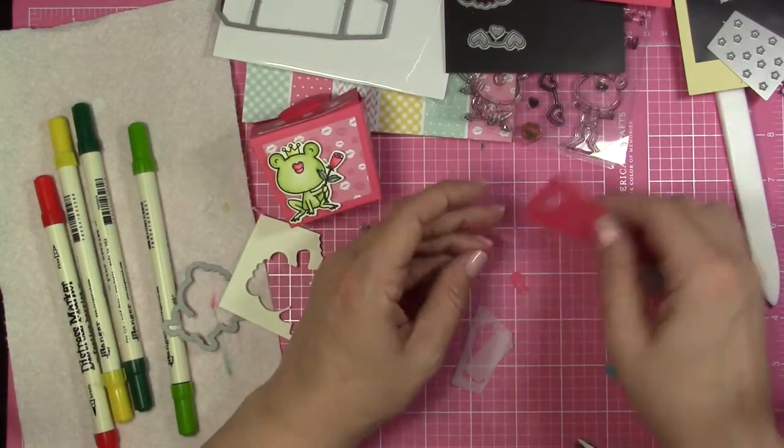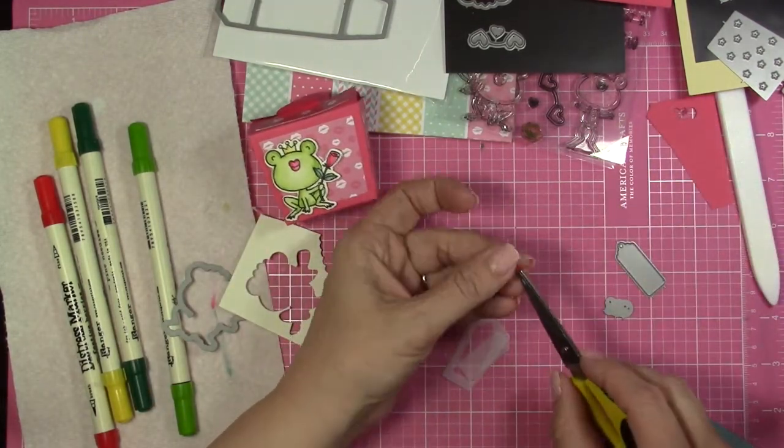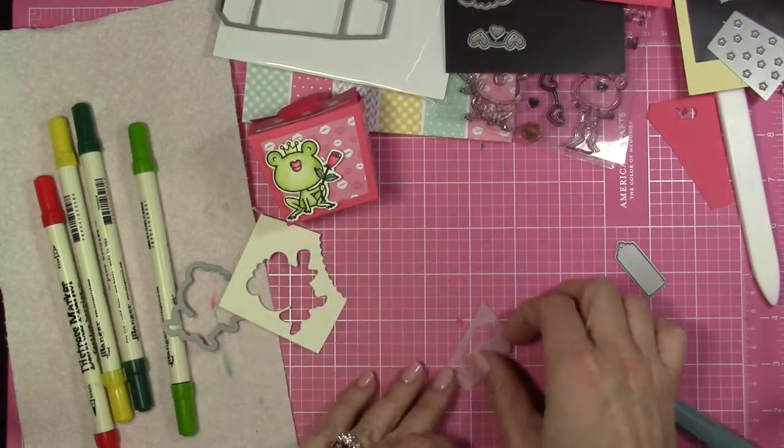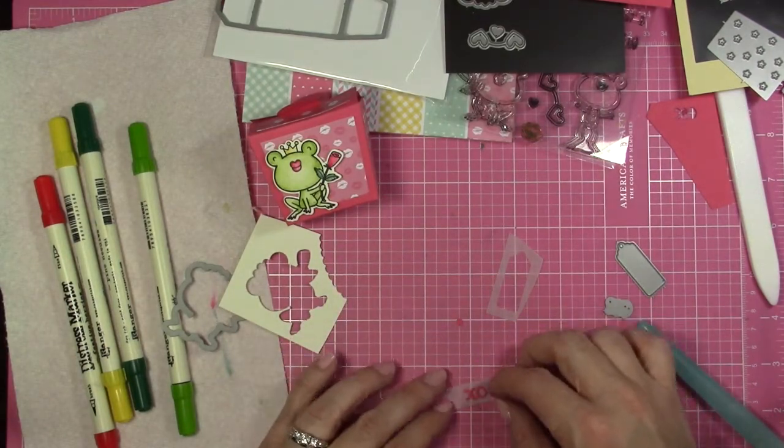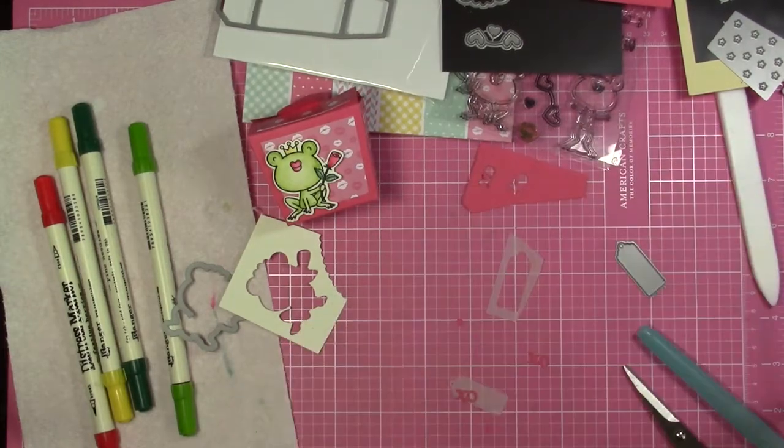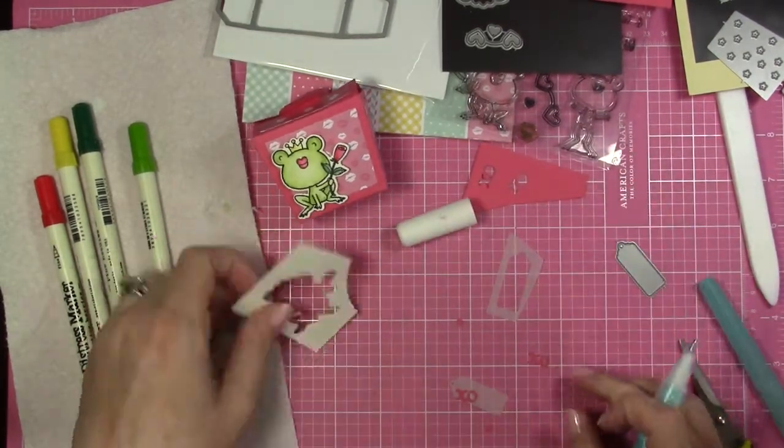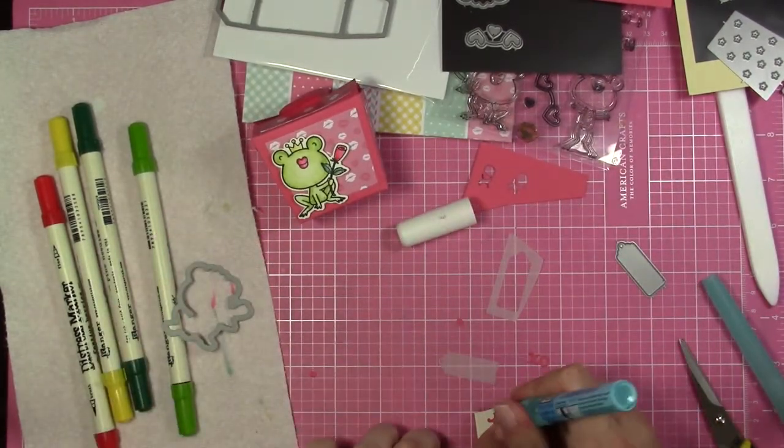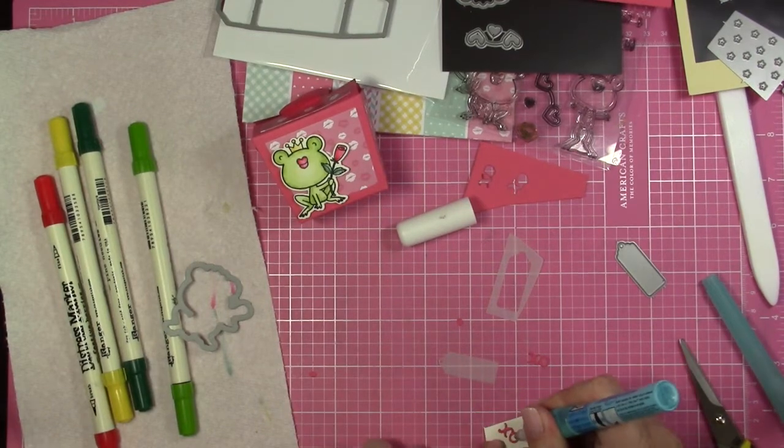And then I'm just going to take, when I cut it out of my Big Shot, I'm just going to take a glue pen, some kind of fine glue pen and just use that to adhere the XO to my little tag.